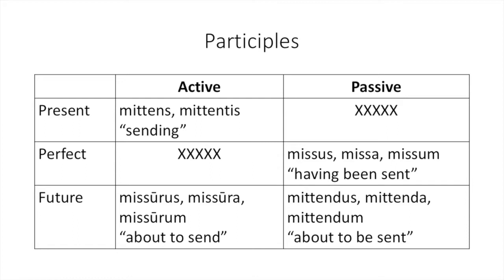This particular one that we're going to start with, the passive paraphrastic, is only going to use the future passive participle — the one that we get from our second principal part. Take off the RE, add on N-D-U-S, N-D-A, and N-D-U-M to get our nominative singular forms, just like the adjective magnus, magna, magnum. We'd translate it, if it's an adjective, as 'about to be sent.' In passive paraphrastics, we'll tweak how we translate it just a little bit.